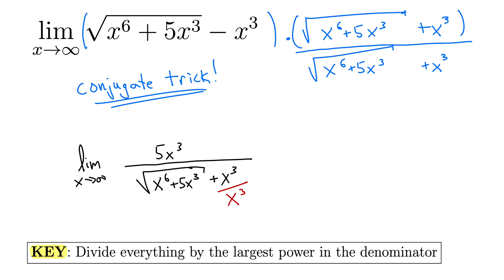So here we'll write x cubed as square root of x to the 6th. Note that that is the same thing as x cubed. And down here we have x cubed, or up here in the numerator we have x cubed as well.